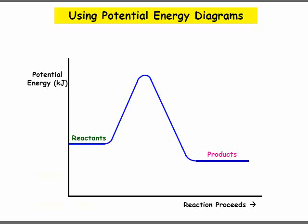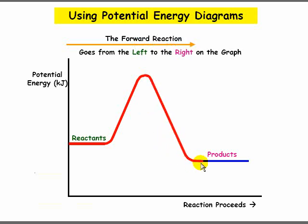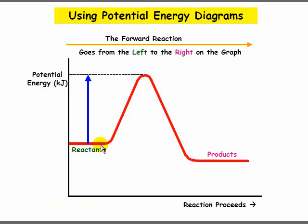In this video, we're going to see how chemists use potential energy diagrams. The forward reaction goes from the left side to the right side on the graph, as we follow the red line. The difference in energy between the reactants and the activated complex is called the activation energy. Since we're dealing with the reaction going from left to right, or the forward reaction, we call this Ea forward.